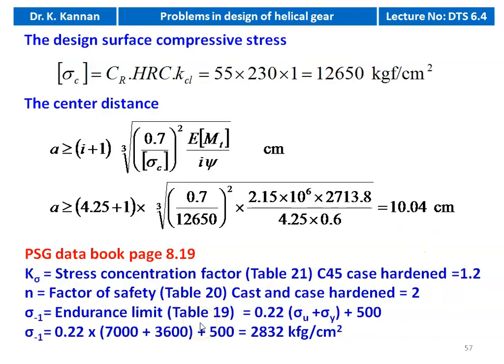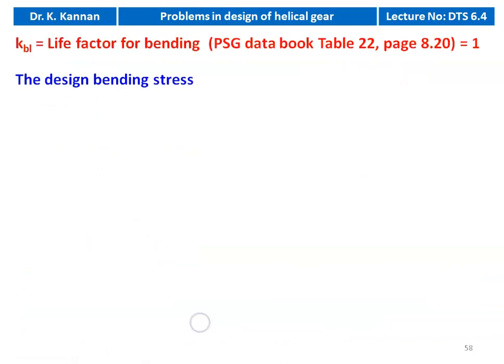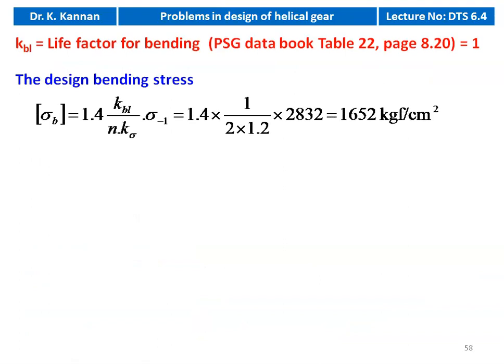To calculate design bending stress, stress concentration factor K_sigma = 1.2 from table 21, factor of safety N = 2 from table 20. Endurance limit = 0.22 × (sigma_u + sigma_y) + 500 = 0.22 × (7000 + 3600) + 500 = 2832 kgf/cm², where tensile strength = 7000 and yield strength = 3600 for C45 steel. Life factor KBL = 1. Design bending stress sigma_b = (1.4 × KBL)/(N × K_sigma) × sigma_{-1} = (1.4 × 1)/(2 × 1.2) × 2832 = 1652 kgf/cm².